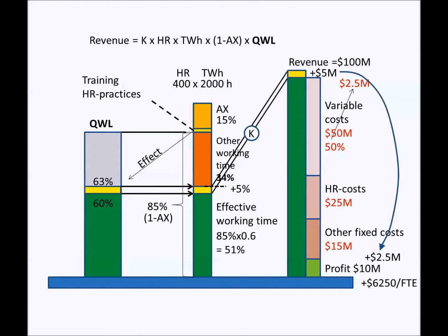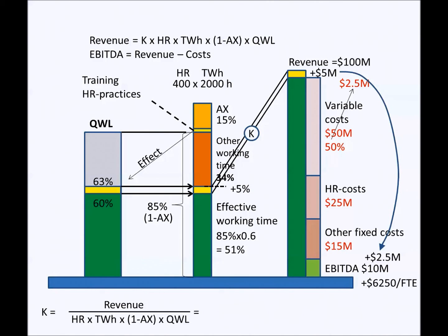The operating profit in financial terms — earnings before interest, taxes, depreciation and amortization — is revenue reduced by all costs. The human resource business coefficient, shortly the K-factor, can be calculated from the earlier year realization. When numbers are inserted in the equation, there will be a coefficient of 315.7 dollars per hour. This means that one effective working hour produced 315.7 dollars per hour.